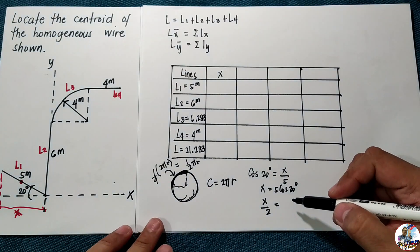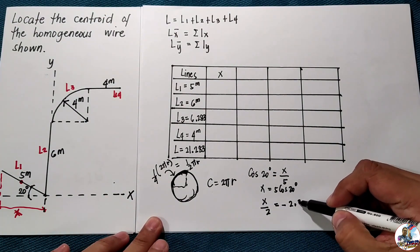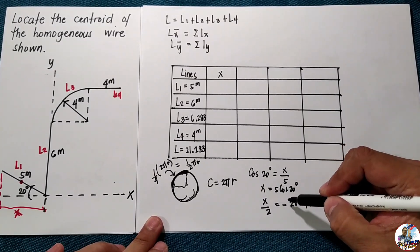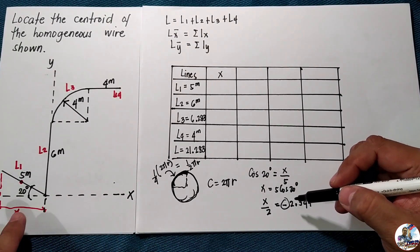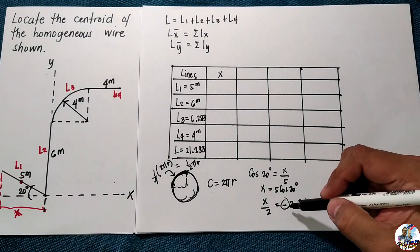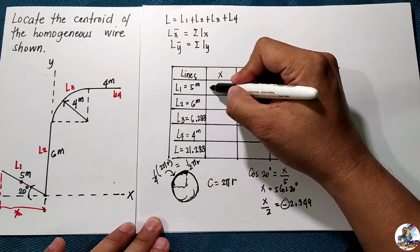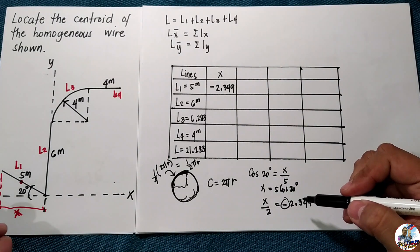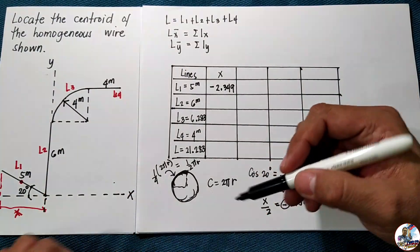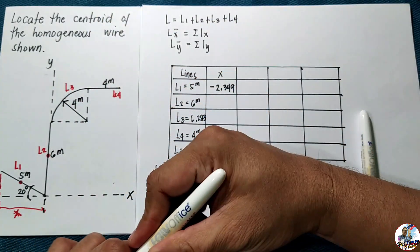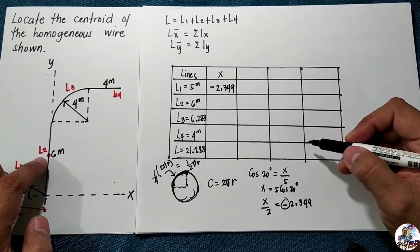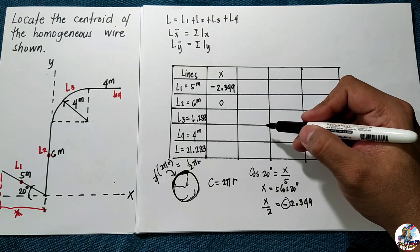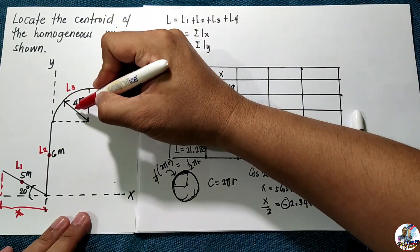Evaluating five cosine 20° divided by two gives negative 2.349. It is negative because the centroid of L1 is to the left of the y-axis. For L2, the centroid of the six-meter line coincides with the y-axis, so the x-distance is zero.